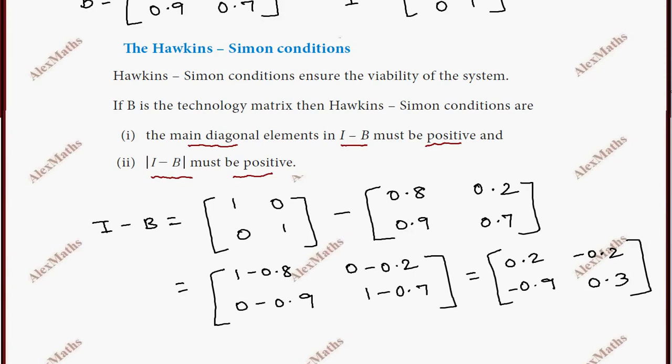The leading diagonal is the main diagonal, so the main diagonal elements are positive. First condition: the main diagonal elements in I minus B must be positive, so it is satisfied. Now second condition: check the determinant value.